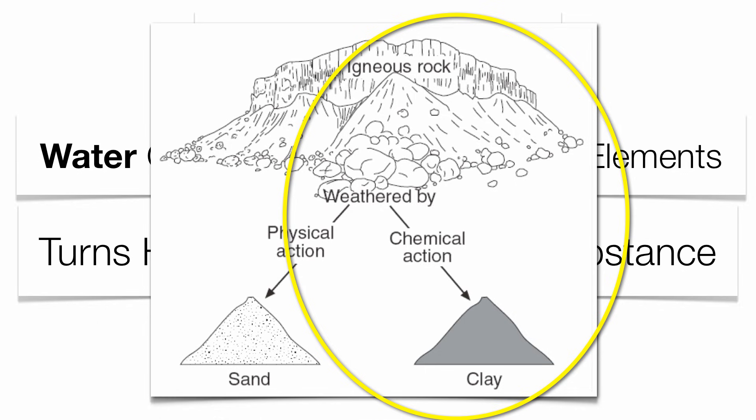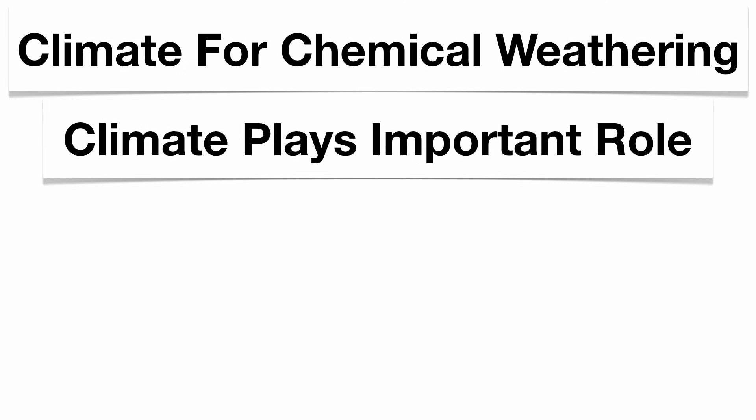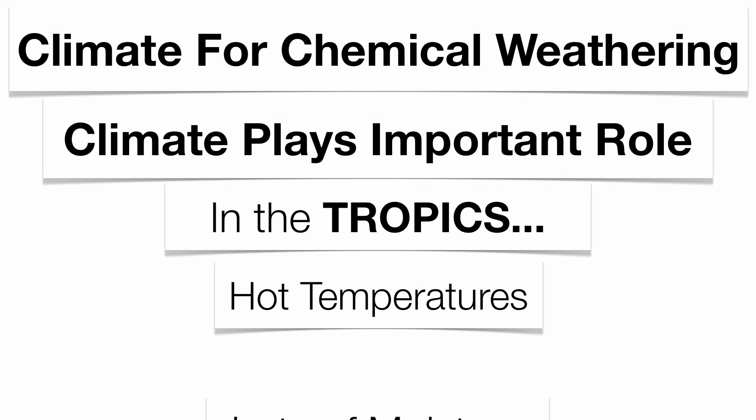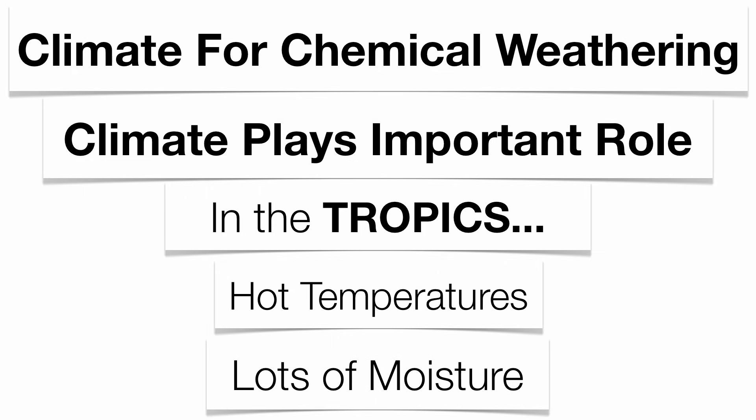Those are your basic types of chemical weathering. Realize that chemical weathering only happens more prominently in certain parts of the country, so climate has a major impact on the types of chemical weathering you're dealing with. The majority of chemical weathering is found in the tropics, simply because of the hot temperatures and lots of moisture. You'll see a similarity between chemical and physical weathering in that you need a lot of water, but for chemical weathering you also need hot temperatures. That's it for now on chemical weathering — talk to you soon.